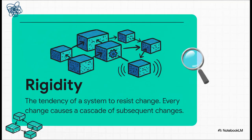The first big symptom is something called rigidity. This is when you try to make one tiny, logical change, but it forces you to go hunt down and change code in a dozen other places you didn't expect. The system basically fights you every single step of the way, making development slow, expensive, and painful for everyone involved.